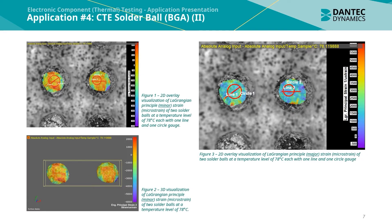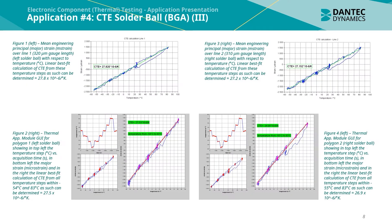Figure 1 shows a 2D overlay visualization of the Lagrangian principal minus strain in microstrain, with each of the two solder balls having one line and one circle gauge element. Figure 2 shows a 3D visualization of the Lagrangian principal minus strain of the two solder balls at a temperature level of 78 degrees Celsius. Figure 3 shows a close-up 2D overlay visualization of the Lagrangian principal major strain of the two solder balls.